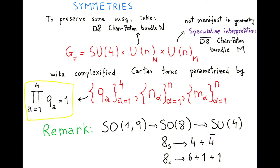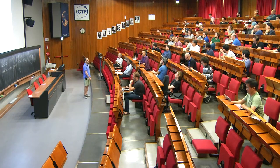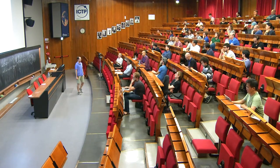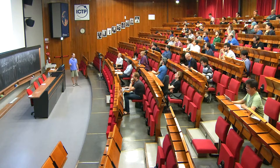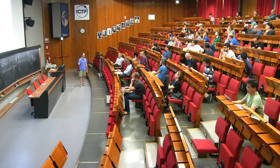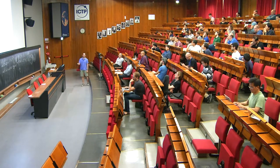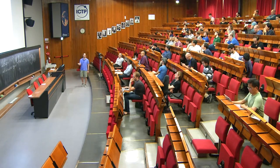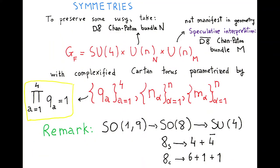This G_flavor has a Cartan torus parametrized by parameters Q_A, A from 1 to 4, which span the SU(4), and so they have product equal to 1. The Coulomb branch — call it big N — is parametrized by n_alpha, alpha from 1 to N. Similarly for the fundamental masses: I call them m_alpha, again alpha 1 to N for bundle M. We already broke SO(9) to SO(8), so there will be a transverse U(1). The Q's are what the familiar omega background uses — they are just exponentials of the epsilon parameters, and I complexify everything because that's useful.